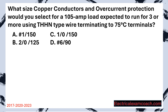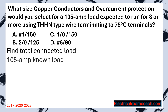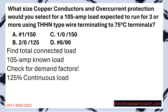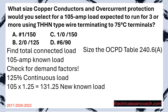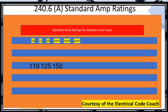What size copper conductors and overcurrent protection would you select for a 105 amp load expected to run for three or more hours using THHN type wire terminating to 75 degrees C terminals? Step one: find the total connected load — 105 amps is our starting known load, but we must check for demand factors. We find that we have the 125% continuous load rule, so we do our math: take the original starting known load and multiply it by 1.25, giving us a new known load of 131 amps. Now we size our overcurrent protective device — we head to table 240.6A and choose the next standard size, which is a 150.